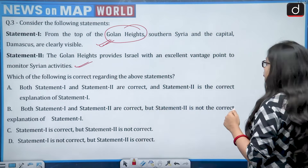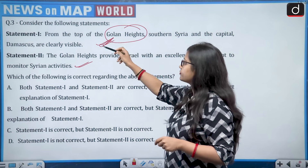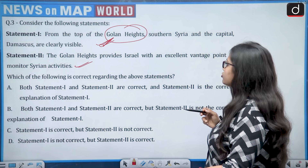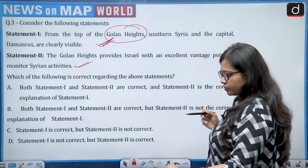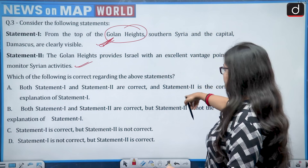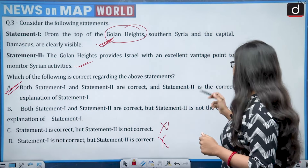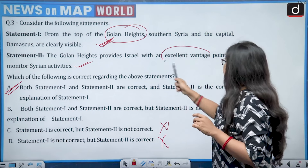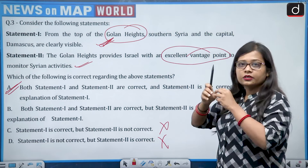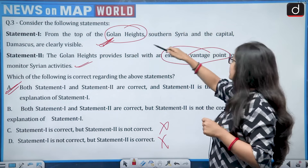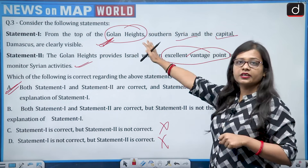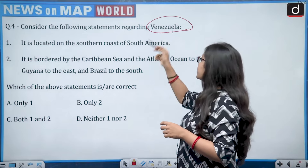Both statements one and two are correct, and statement two is the correct explanation of statement one — because the excellent vantage point the Golan Heights provides to Israel is exactly why southern Syria and the capital Damascus are clearly visible. So option A is correct.